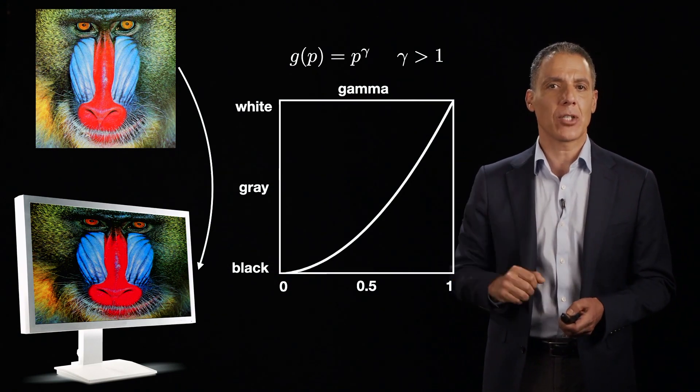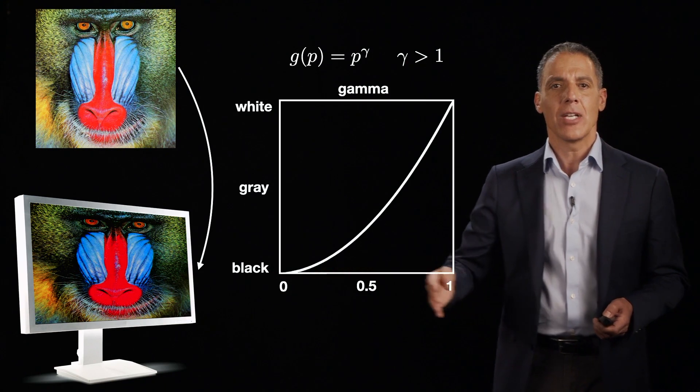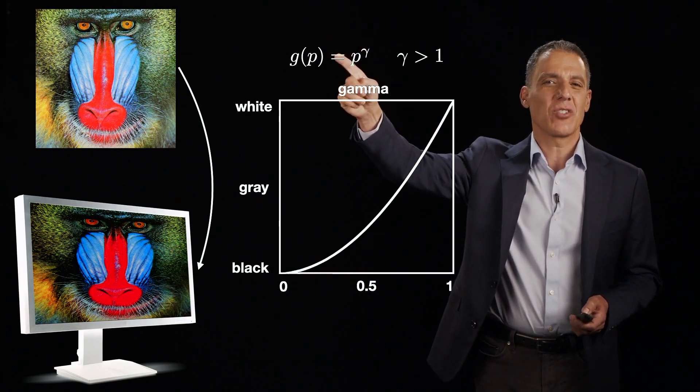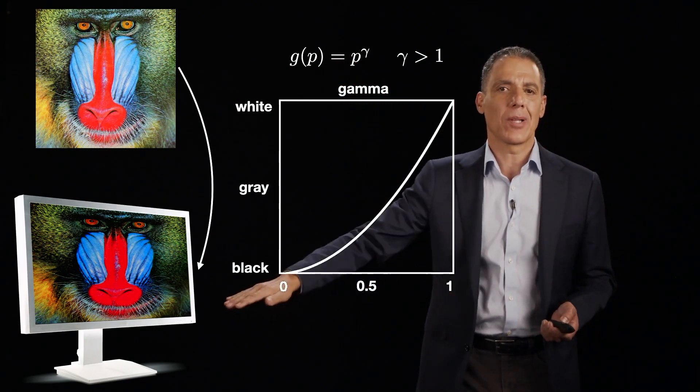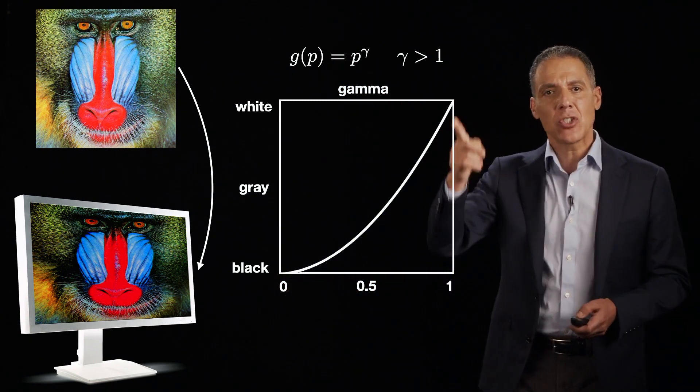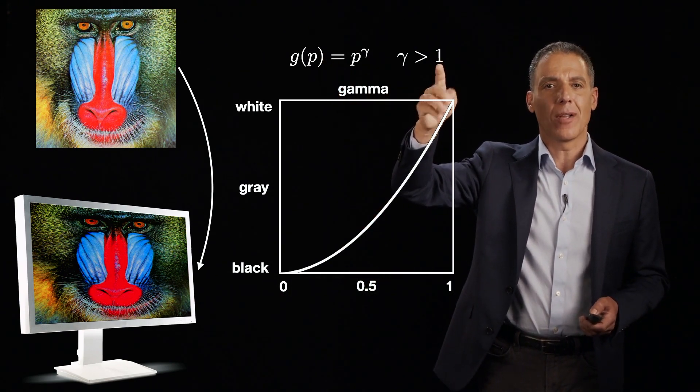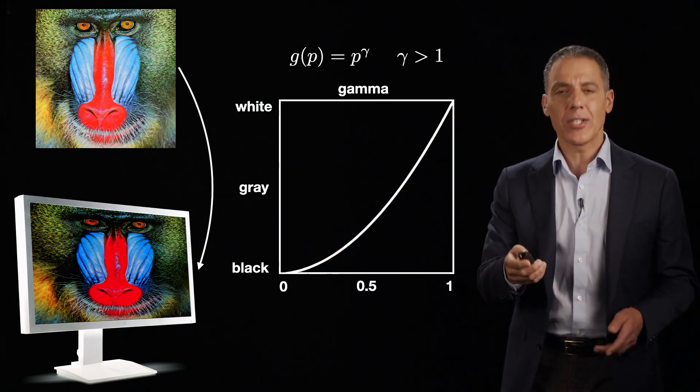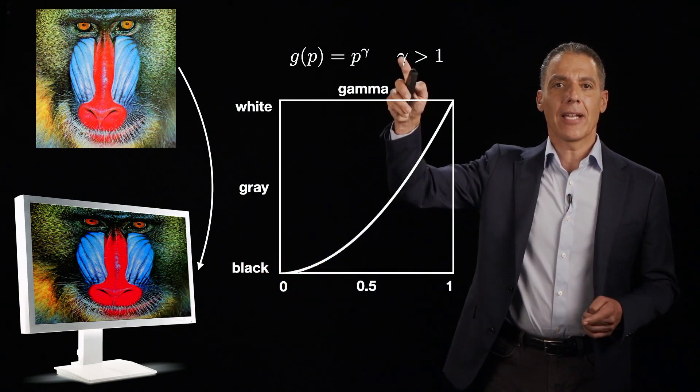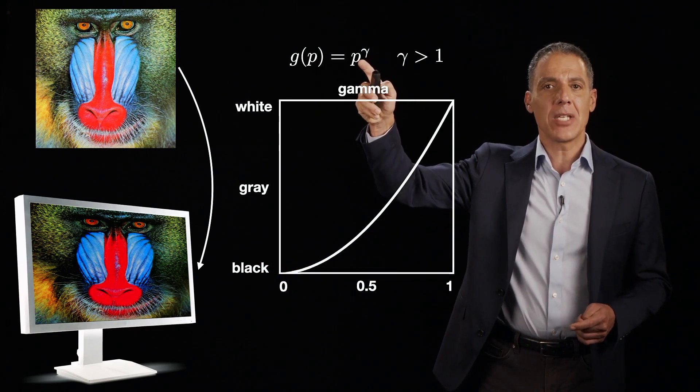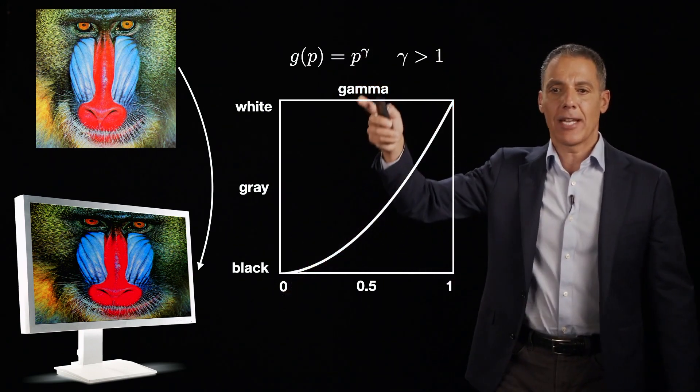So let's talk about first gamma correction. Now here, what you'll notice here is that I'm going to change my scale from 0 to 255 to be 0 to 1. And the reason why I'm doing that is I'm going to start raising things to a power. And I want 0 to map to 0 and 1 to map to 1. So all I've done is just normalize this between 0 and 1 instead of 0 to 255. And what I'm showing you here in this plot is a gamma function where gamma is greater than 1. Think about a parabola, for example. So what is this function? On the horizontal axis is p from 0 to 1, black to white, dark to light. And I'm plotting here g of p, which is p to the power of gamma.